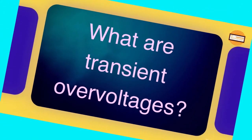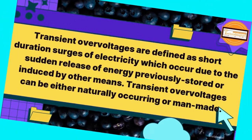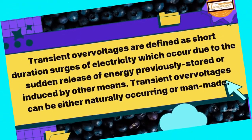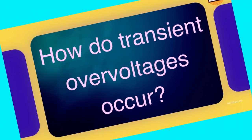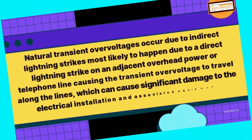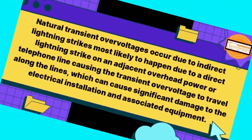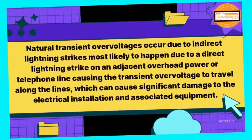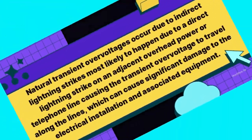What are transient over voltages? Transient over voltages are defined as short duration surges of electricity which occur due to the sudden release of energy previously stored or induced by other means. They can be either naturally occurring or man-made, such as indirect lightning strikes or a direct lightning strike on an adjacent overhead power or telephone line, causing the transient over voltage to travel along the lines and cause significant damage to the electrical installation and associated equipment.